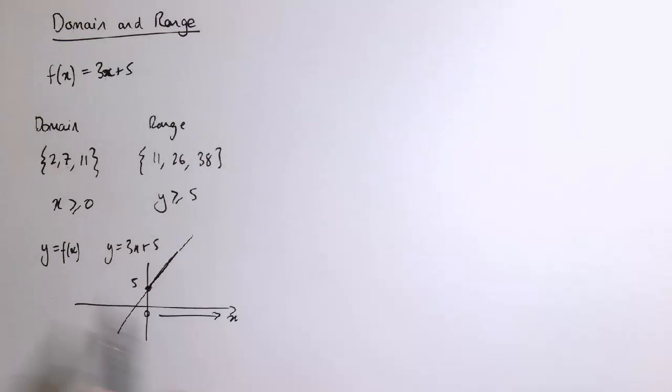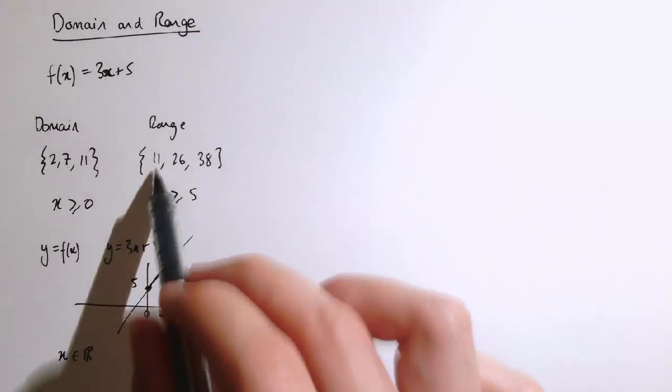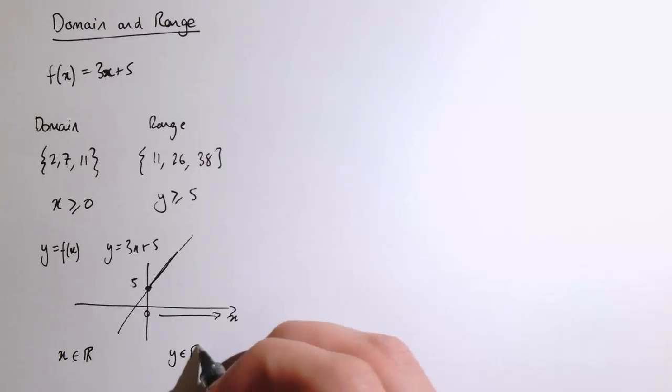If I took the domain to be all values, all real numbers, x belongs to the set of real numbers, then all the possible y values would also be all the real numbers here.